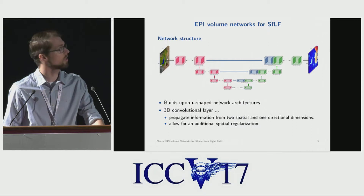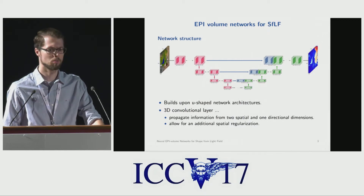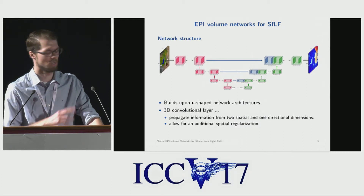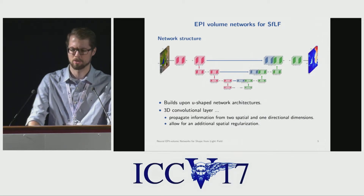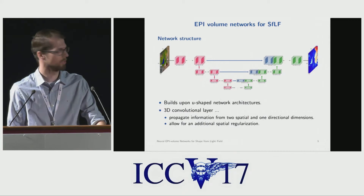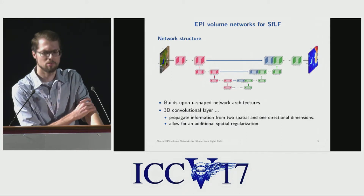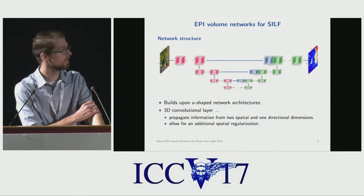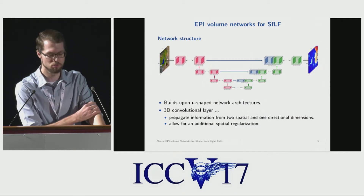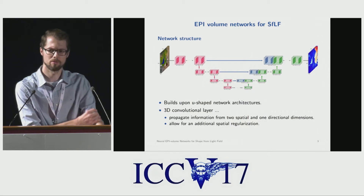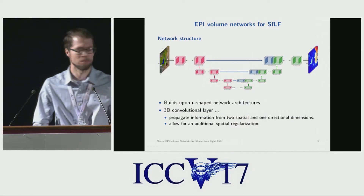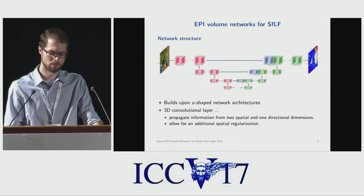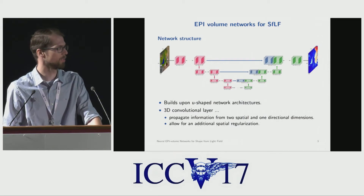Here you see an overview of our network structure. We use a U-shaped network structure, which means we have an encoding part and a decoding part marked in red and green here, and we also use these skip connections, which allow to maintain high-frequency information. An important aspect of the network is that we use in every layer 3D convolutional layers, which allow to propagate information in the two spatial dimensions and also in one angular dimension. This allows to train an additional spatial regularization.